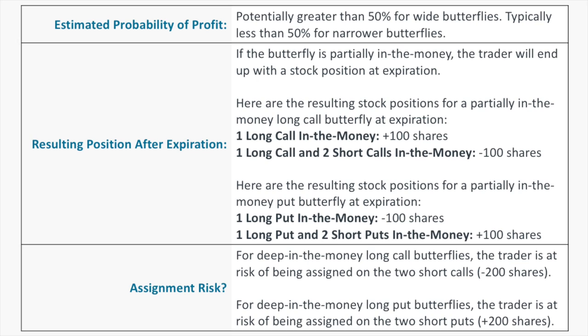Regarding assignment risk: a long butterfly spread has two short options in the middle of the spread. For deep in-the-money long call butterflies, the trader risks being assigned on the two short calls, meaning assignment risk of -200 shares. For a deep in-the-money long put butterfly, assignment risk is +200 shares. If your long butterfly gets deep in the money and those short options have very little extrinsic value remaining, be aware of the potential for early assignment on those short options.